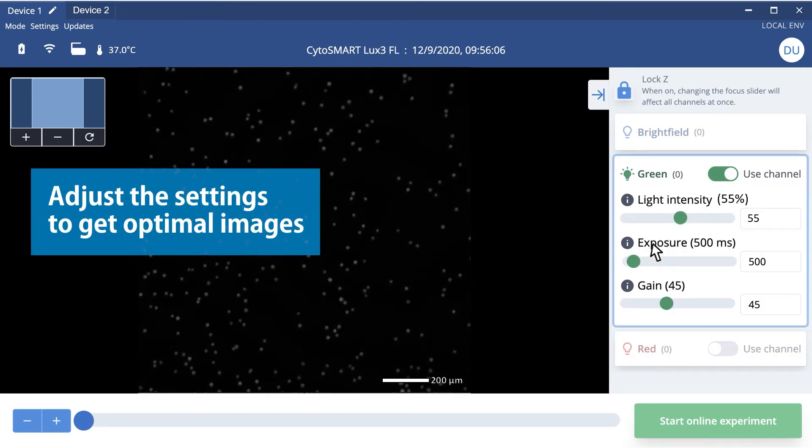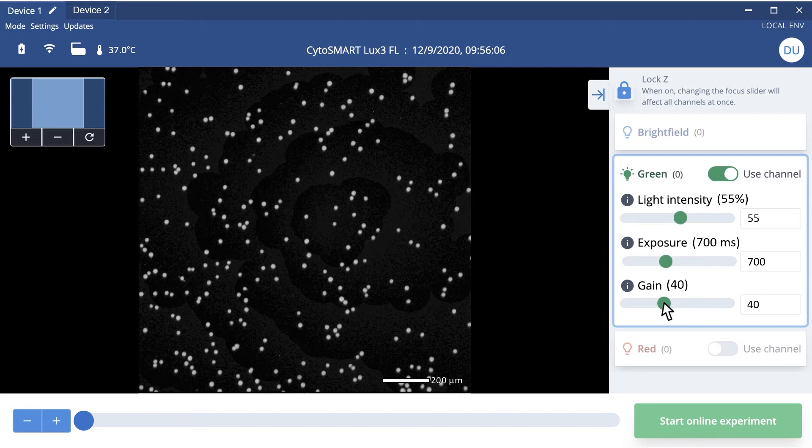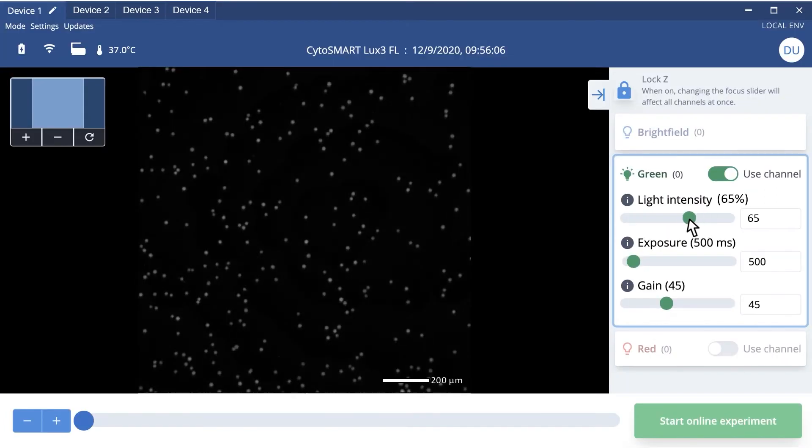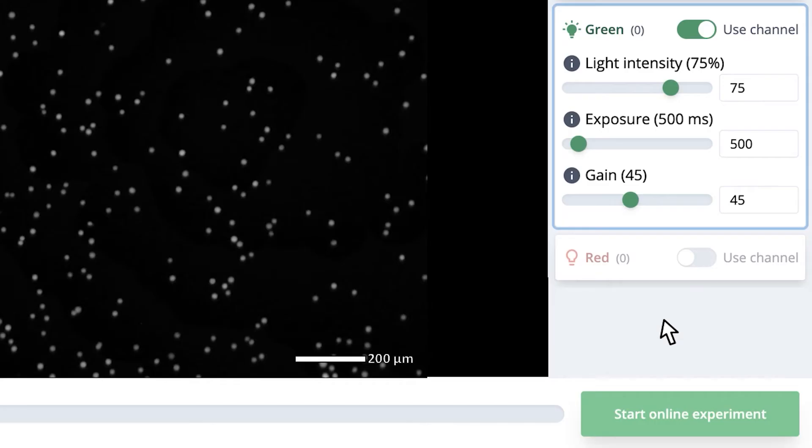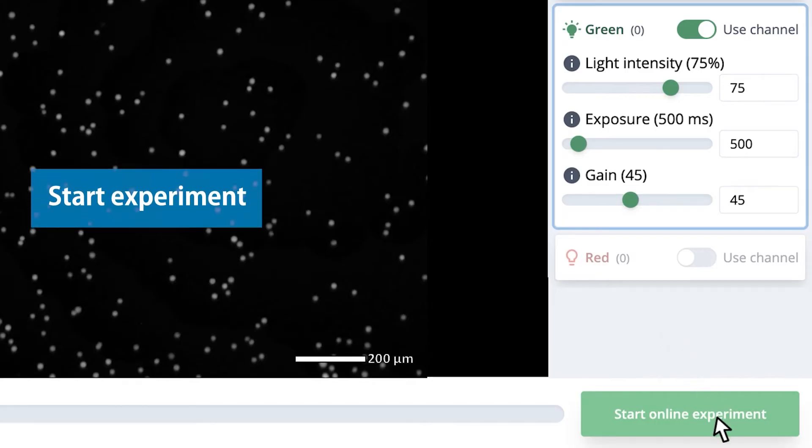Adjust the settings for bright field and fluorescent channels to get optimal images. Beware that too large of a light intensity or exposure time can harm your cells. When you're satisfied with the shown preview, it's time to start your experiment.